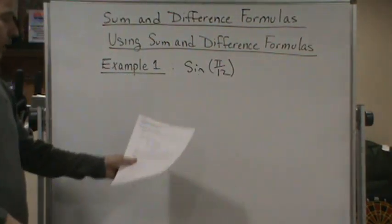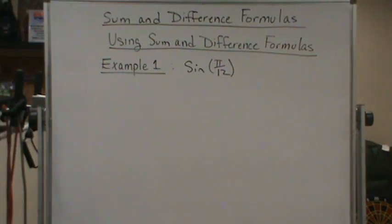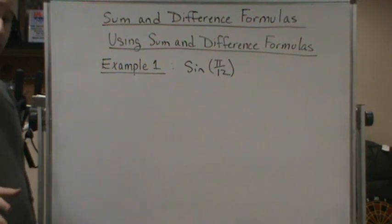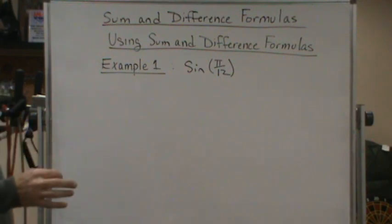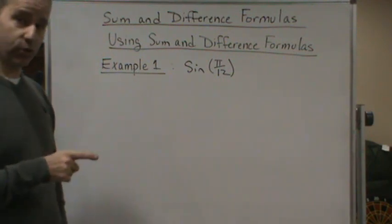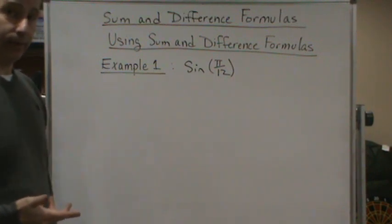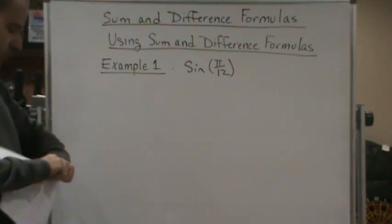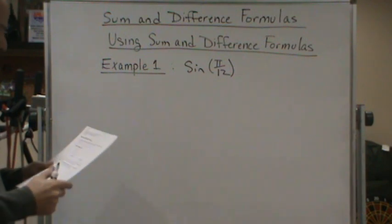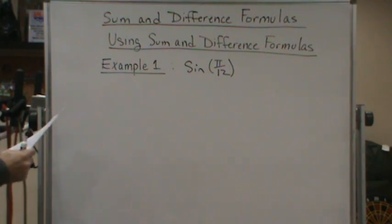Like this one, pi over 12. But we can use the sum and difference angles to rewrite this into something that we can find the exact value. So for this one, they want us to find the exact value of the sine of pi over 12.